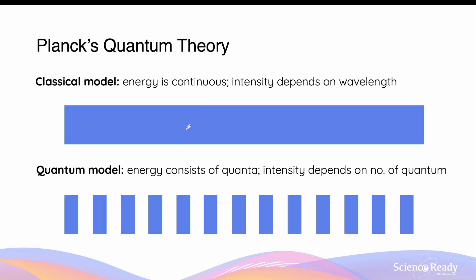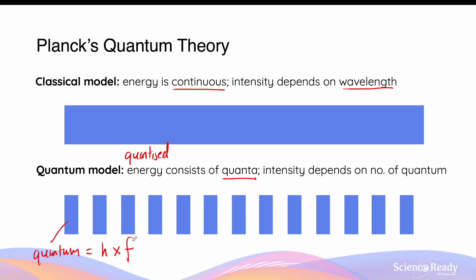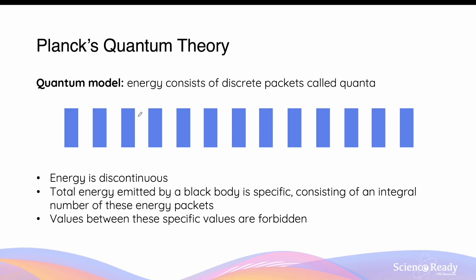Comparing the two models: the classical model hypothesizes that energy emitted by a black body is continuous and intensity is inversely proportional to wavelength, so as wavelength decreases, intensity increases. In contrast, the quantum model states that energy is quantized — consisting of discrete packets called quanta — where the energy of each quantum is given by Planck's constant multiplied by frequency. In the quantum model, the intensity of radiation depends on the number of quanta possessing a specific frequency or wavelength. The key difference is that the quantum model implies energy is discontinuous.